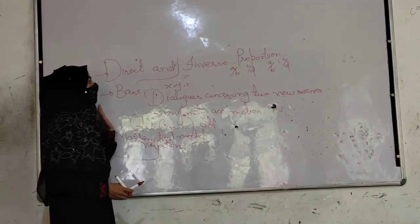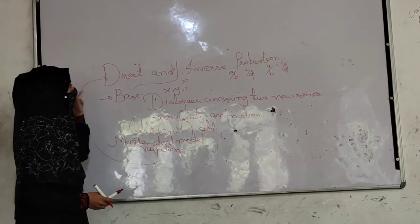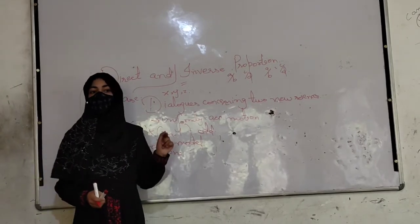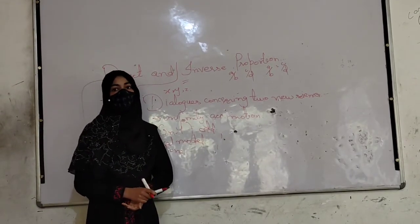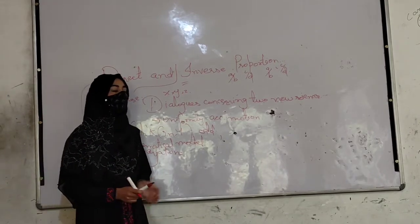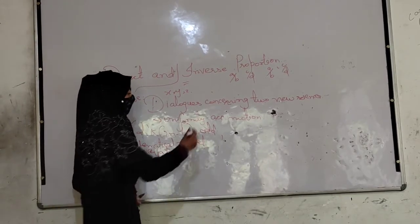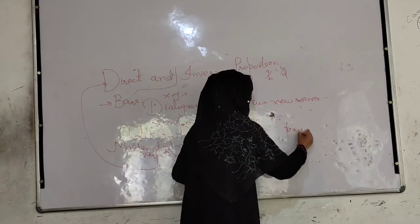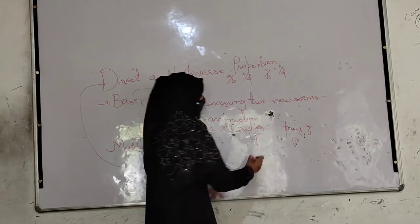Now we go on our first topic — direct proportion. First I'll show you the relation between this mathematical model and direct and inverse proportion, then we'll go to the topic of direct proportion, with an example to make it better understood. Imagine you are going to buy candles for your party or decoration. When you go to the shop, if you buy more candles you have to pay more money, and if you buy fewer candles you have to pay less money. We denote the number of candles as x and the price as y.